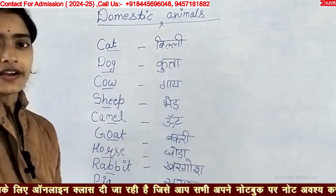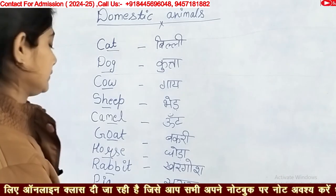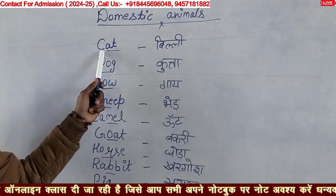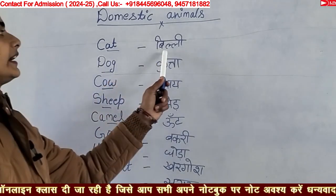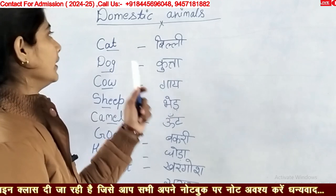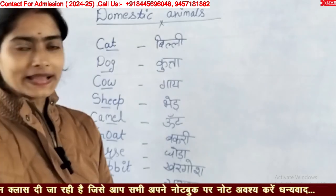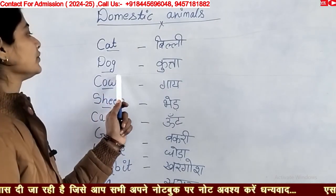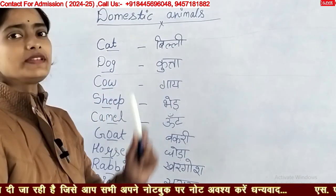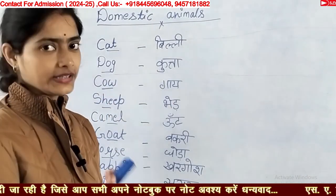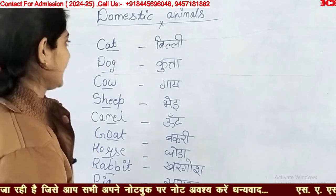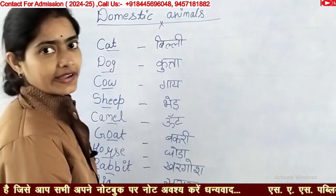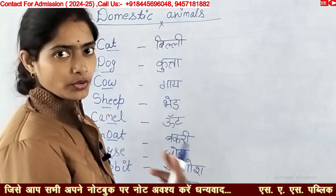Bacho, ek baar phir se dekho. C-A-T — cat means billi. Billi ko hum apne ghar mein paalte hain. D-O-G — dog means kutta. Cow — cow means gaay.